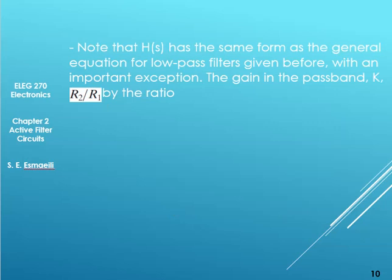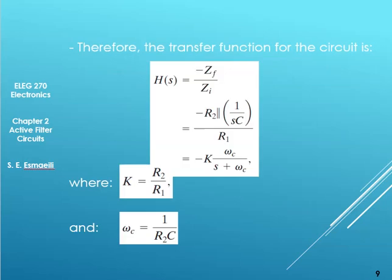The general format is omega c over s plus omega c. This is the general format. If you remember, this format was also there in the passive filters, in the RL and RC. This was the format for low pass: it was always this format, omega c over s plus omega c.